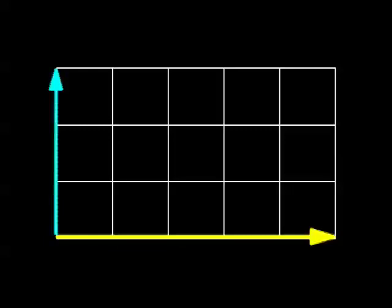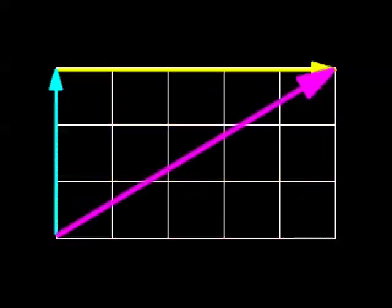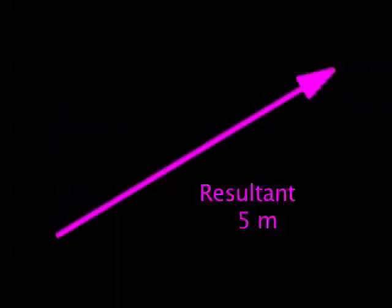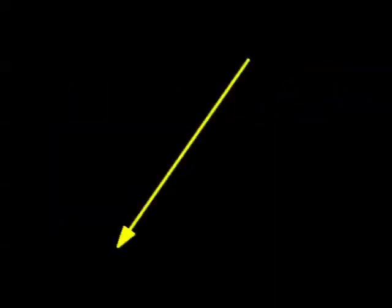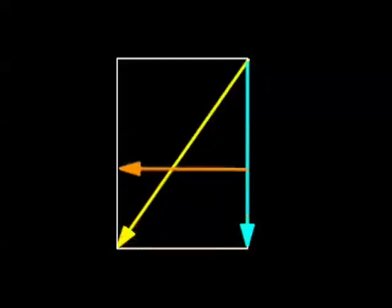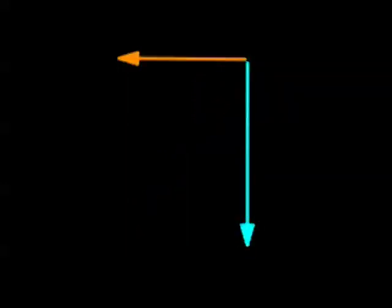We can use the tip to tail method to resolve vectors at an angle. Redraw the vectors tip to tail and sketch the resultant. We can use the Pythagorean theorem because these vectors are at a right angle. We can use this method in reverse by starting with the resultant, drawing a rectangle, and then finding the components tip to tail and putting them back into their original form.